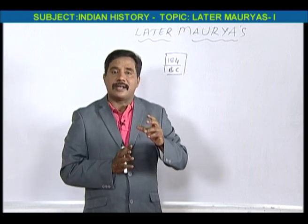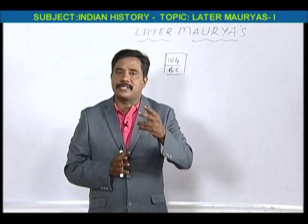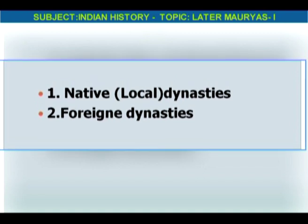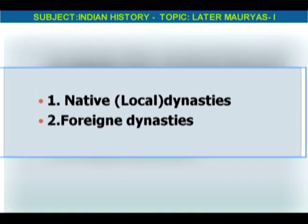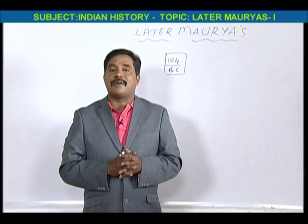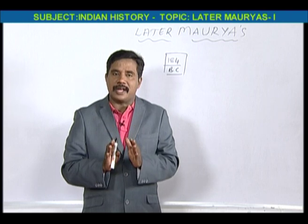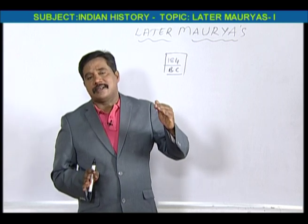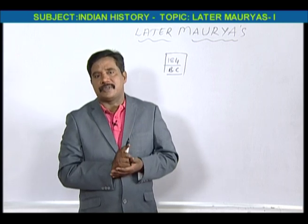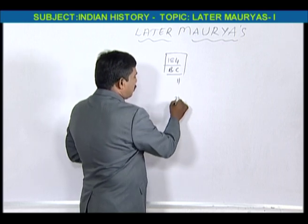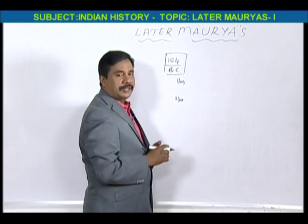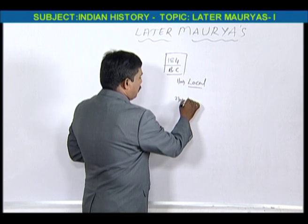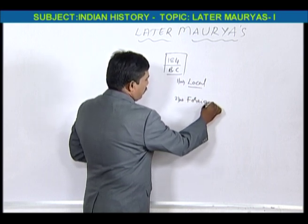There are two kinds of dynasties that existed — one, native or local dynasties, and foreign dynasties. In South India, Shatavahanas became independent, so politically it became very sound. But North India had this political uncertainty. In North India, we have local political dynasties and foreign kingdoms.